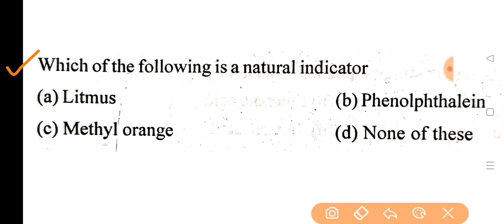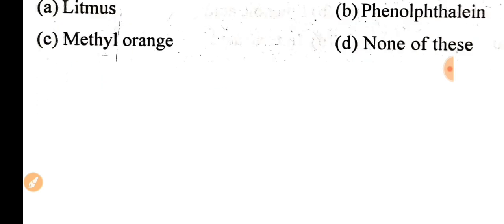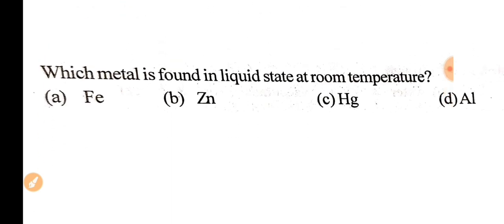Next question: which of the following is a natural indicator? Correct answer is option A, litmus. Next question: which metal is found in liquid state at room temperature? Correct answer is option C, Hg, or mercury.